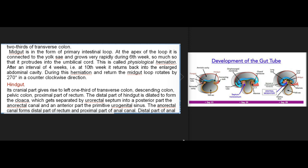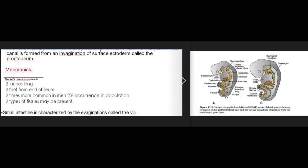The hindgut's cranial part gives rise to the left one-third of the transverse colon, descending colon, pelvic colon, and proximal part of the rectum. The distal part of the hindgut is dilated to form the cloaca, which is separated by the urorectal septum into a posterior part — the anorectal canal — and an anterior part — the primitive urogenital sinus. The anorectal canal forms the distal part of the rectum and proximal part of the anal canal. The distal part of the anal canal is formed from an invagination of surface ectoderm called the proctodeum.